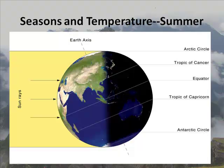Hopefully that helped you understand the tilt of the Earth — the tilt doesn't change. It's not like it does a wobble; it rotates. And just as a side note — why is it warmer in the summer and cooler in the winter?